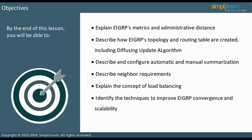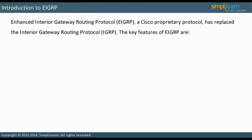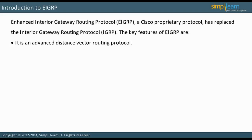Enhanced Interior Gateway Routing Protocol, EIGRP, is a proprietary Cisco protocol which replaced the Interior Gateway Routing Protocol, IGRP. It is also an advanced distance vector routing protocol. However, some people call it a hybrid. It does not have a total view of the network as a link state protocol would, but it maintains more information than RIP.